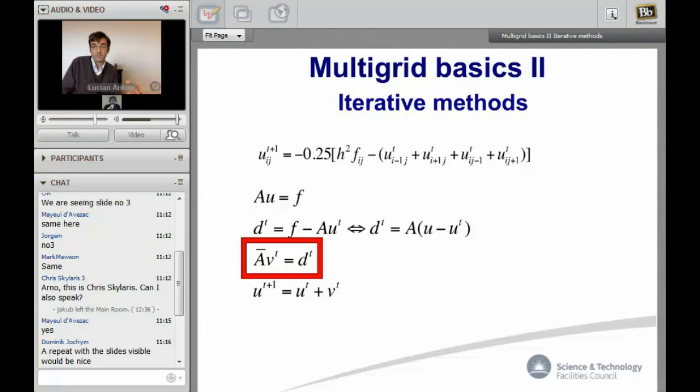A cure was found, multigrid is a cure to this problem. It rests on the observation that if you decompose in Fourier modes the error, you figure out only the long wavelengths have a slow convergence. So the trick is...